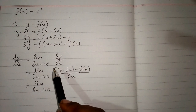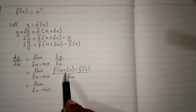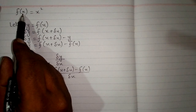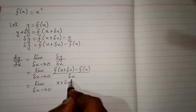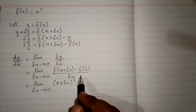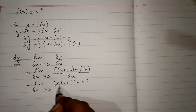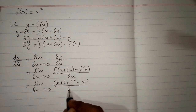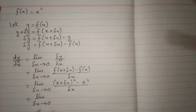Now the function is f of x equal to x squared. So if we put x plus delta x in place of x, we get x plus delta x whole squared. And in place of f of x we put x squared upon delta x. So we have limit delta x tends to 0.